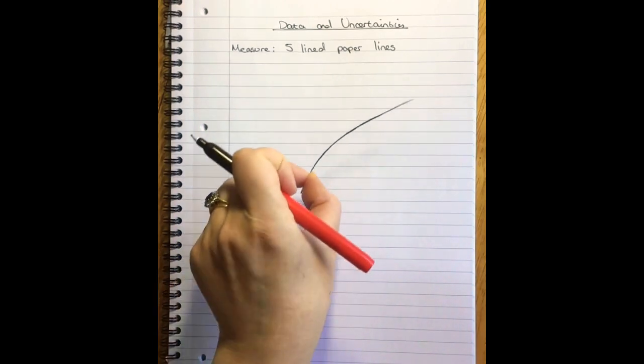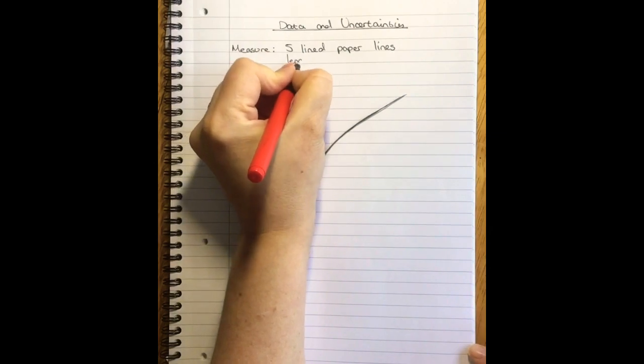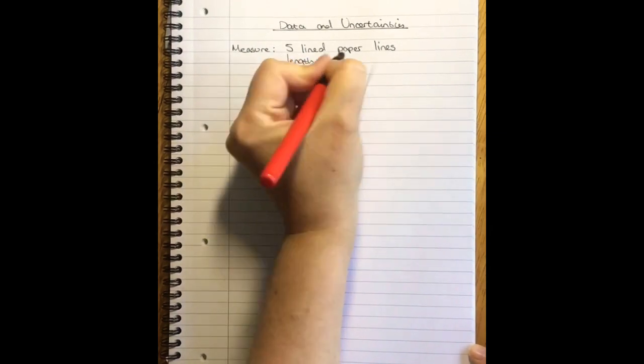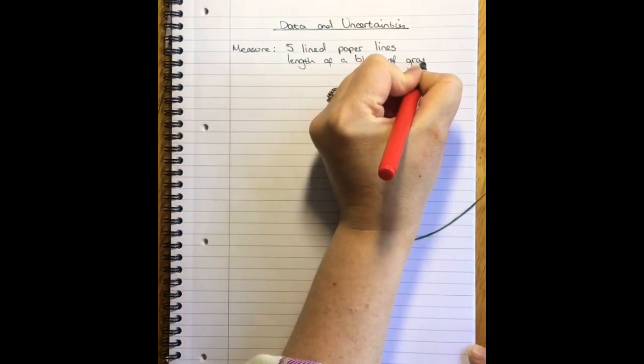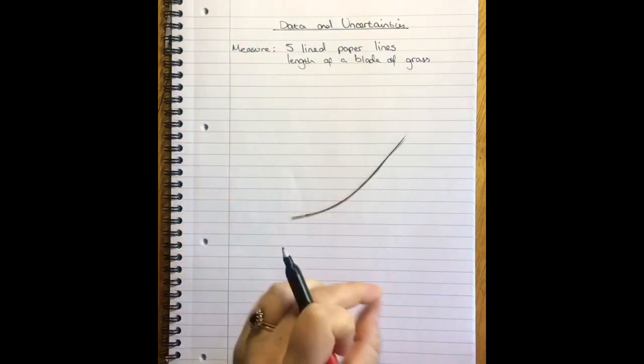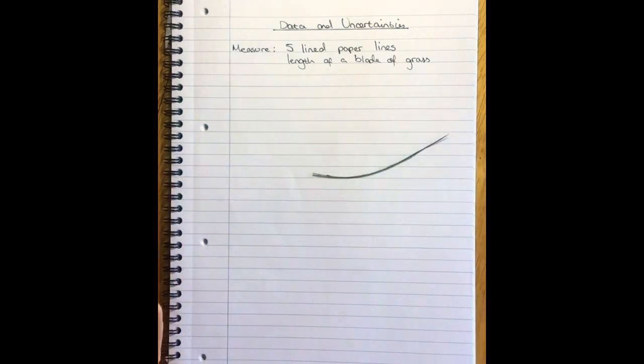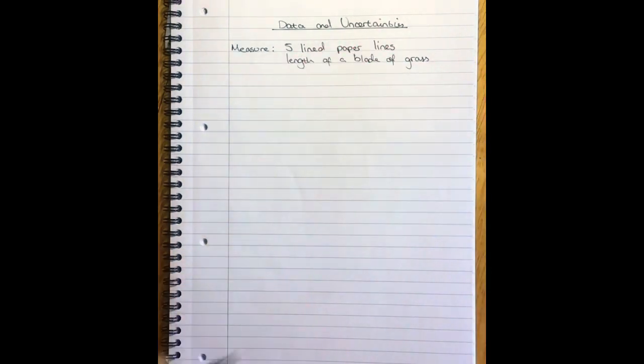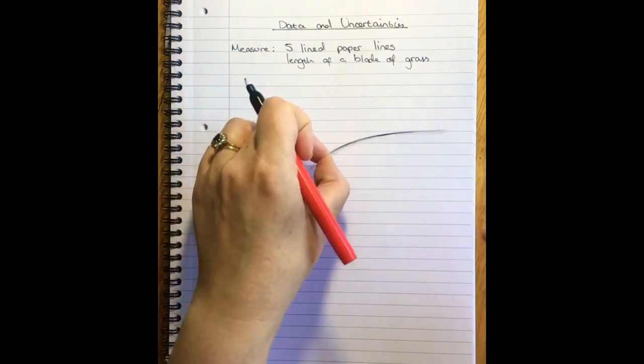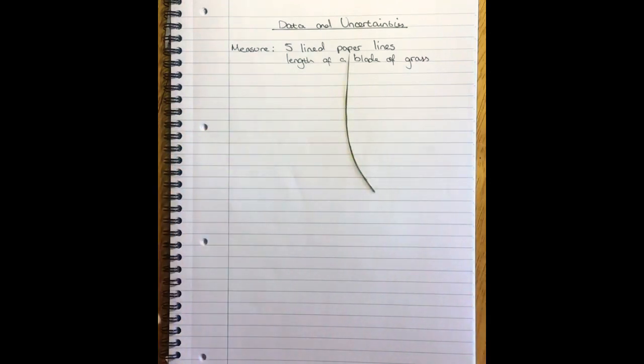The second thing we're going to do is measure the length of a blade of grass. I collected my grass a little while ago so it's a little bit dried and shriveled now. This measurement is obviously very similar to the first, it's still a length you can carry out with just a ruler or any measuring device. But the purpose of using the grass is everyone's going to get a different number.